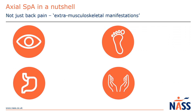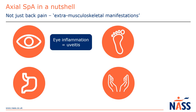Axial SpA is not just back pain. Some people with axial SpA also experience inflammation in other areas of the body. Extra-musculoskeletal manifestations is the term healthcare professionals use — the effects of axial SpA outside of the muscles, bones and joints. For example, around a quarter of people with axial SpA will have a condition called uveitis or iritis at some point in their life, when inflammation occurs in the front part of the eye, causing a red, very painful eye.